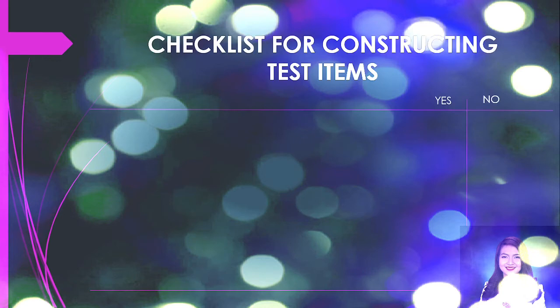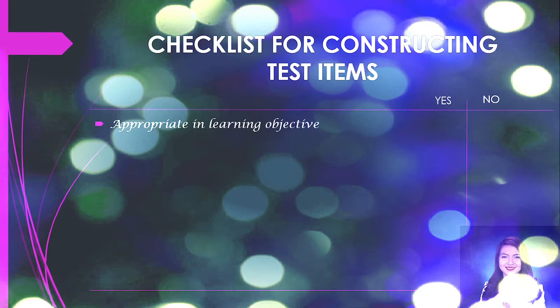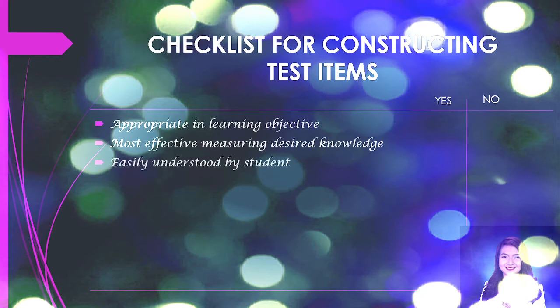Next, here are the checklists for constructing test items. You must know if the item is appropriate to measure your learning objective — you can select yes or no. Next, you must know if the item format is the most effective means of measuring the desired knowledge. Also, check if the item is clearly worded and can be easily understood by the target student population.